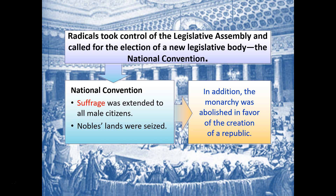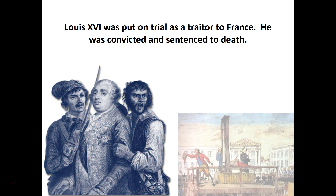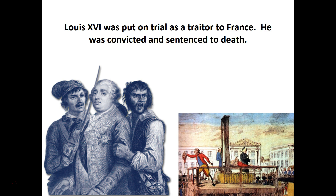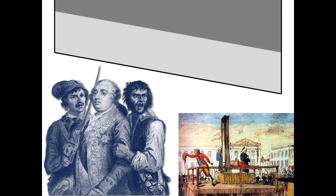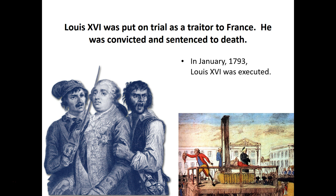Without a king, it becomes much easier to put Louis XVI on trial as a traitor to the Revolution and to France — especially since he tried to escape, casting him as being against the Revolution. Louis XVI is convicted by a close vote and sentenced to die. In January 1793, Louis XVI is executed by the guillotine. Nine months later, in October, his wife Marie Antoinette is also executed by the guillotine.